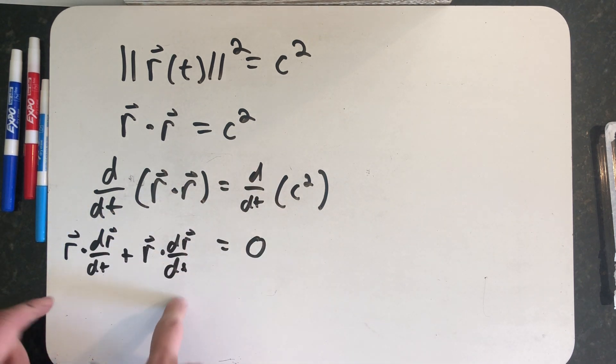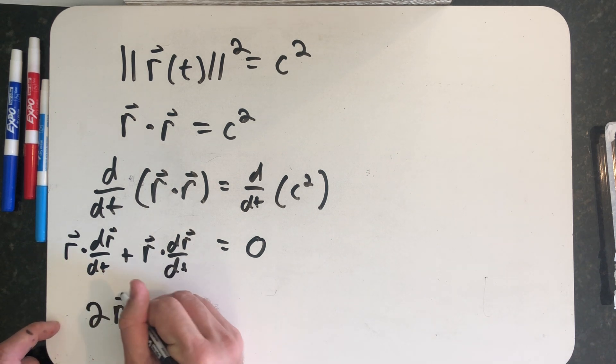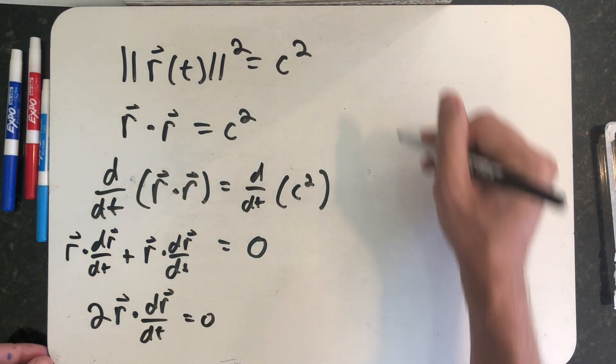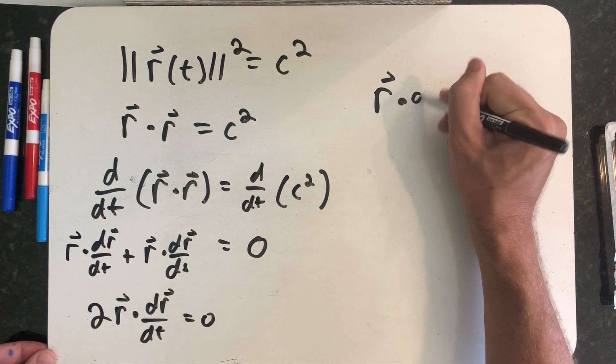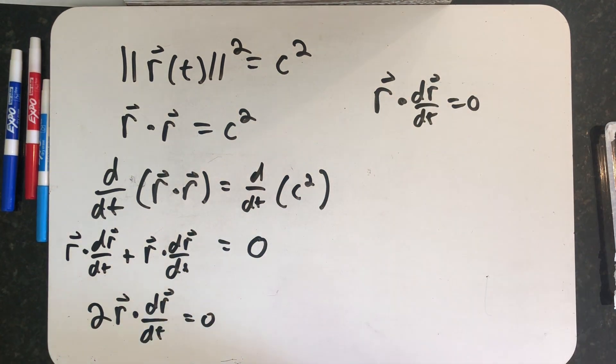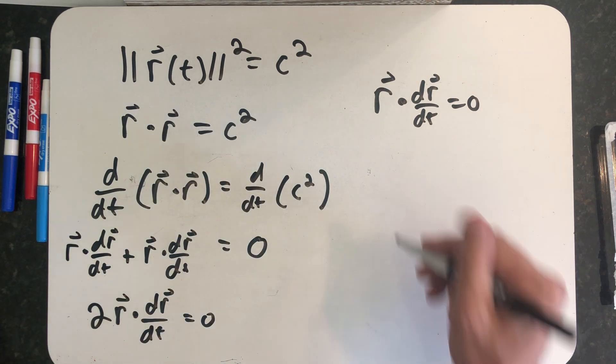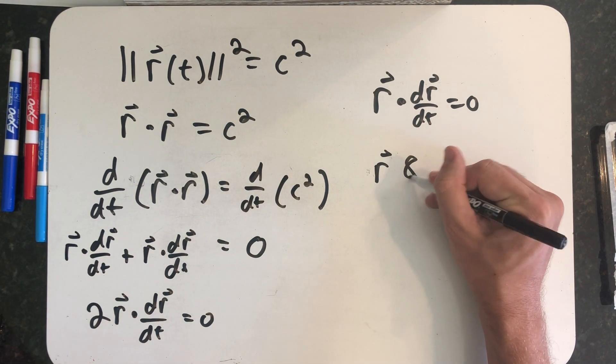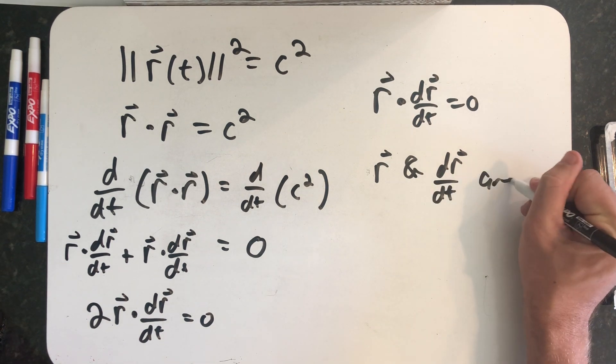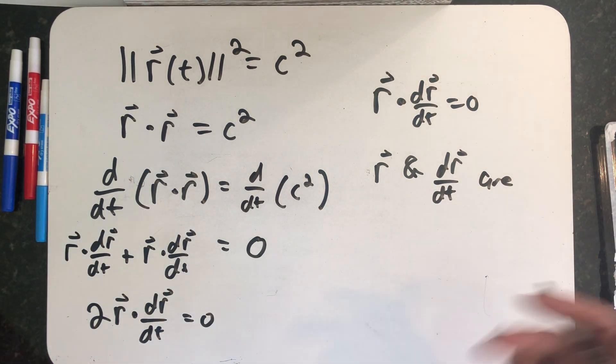Well, since these two vectors are the same, I actually got the same expression twice. So 2 R dot dr dt is equal to zero. Dividing by two, I get the position dot the velocity is zero. And by definition, when the dot product is zero, I have orthogonal vectors. R and dr dt are orthogonal, which means that R and the velocity are perpendicular.